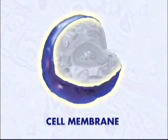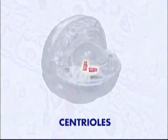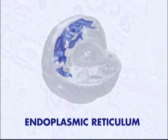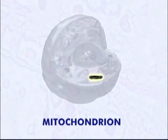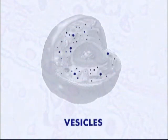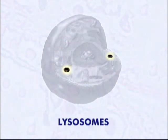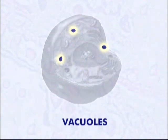Cells have many organelles in common: the cell membrane, nucleus, nucleolus, centrioles, endoplasmic reticulum, ribosomes, mitochondrion, Golgi apparatus, vesicles, lysosomes, peroxisomes, and vacuoles. Keep in mind that some cells have all of these parts, while other cells may only have a few, but it's still important to know each one.